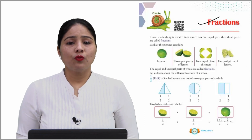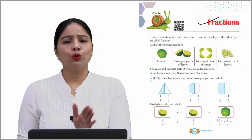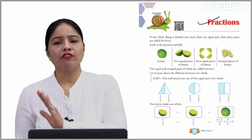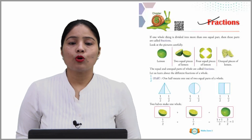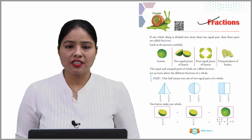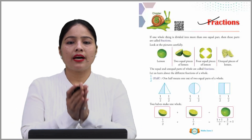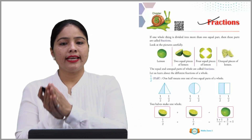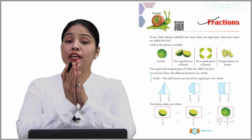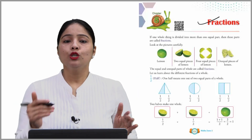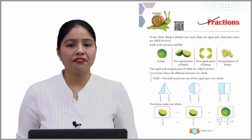If one whole thing is divided into more than one equal part, then these parts are called fractions. जब एक complete चीज़ हमारी एक से ज़्यादा part में divide होती है, वो भी बराबर बराबर, तो वो हमारा कहलाता है fractions.